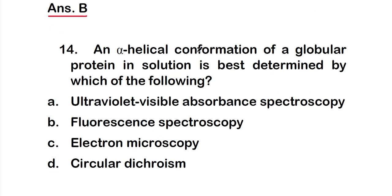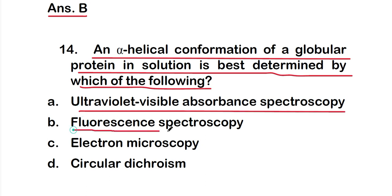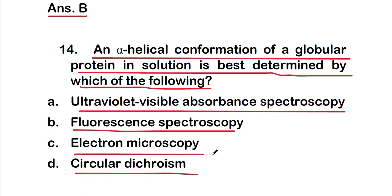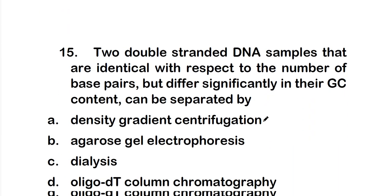Question 14: An alpha-helical conformation of a globular protein in solution is best determined by which of the following? A) Ultraviolet-visible absorbance spectroscopy; B) fluorescence spectroscopy; C) electron microscopy; D) circular dichroism. The right answer is option D — circular dichroism is the technique used to best determine the alpha-helical conformation of a globular protein in solution.